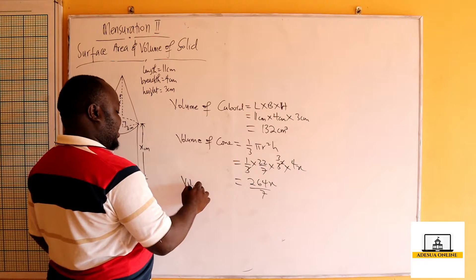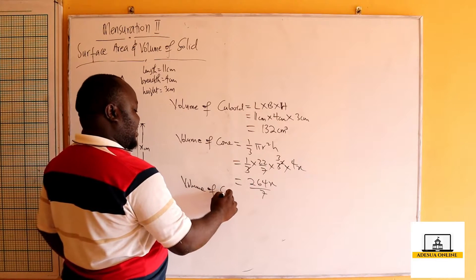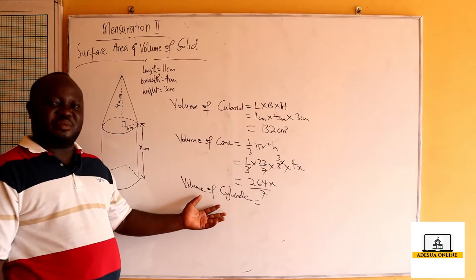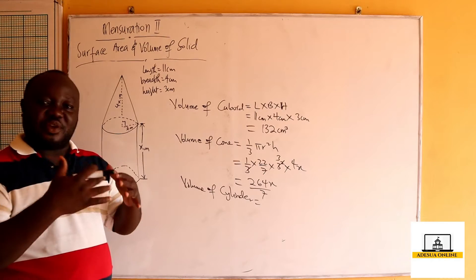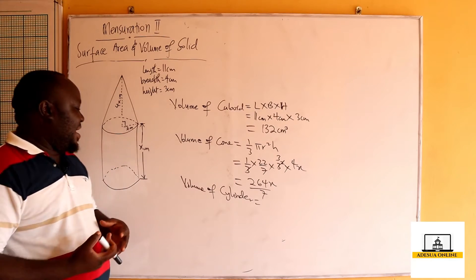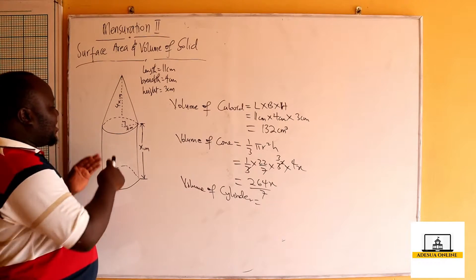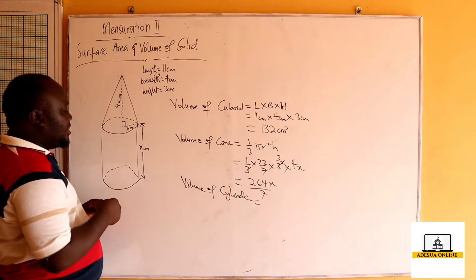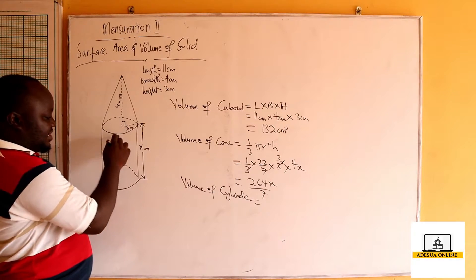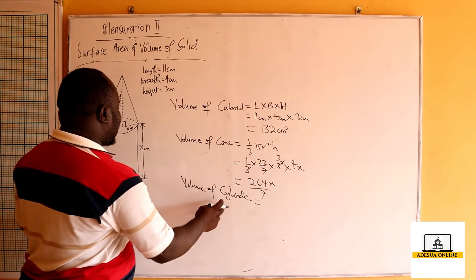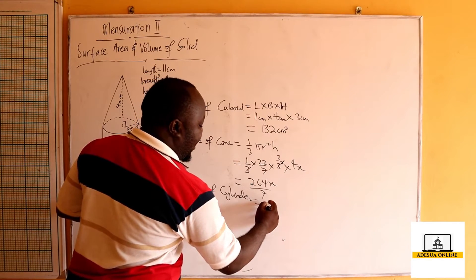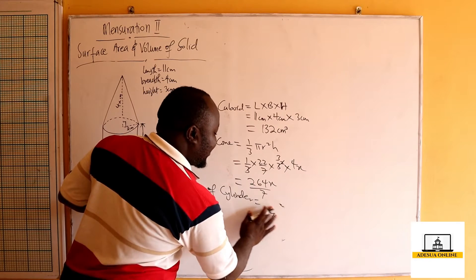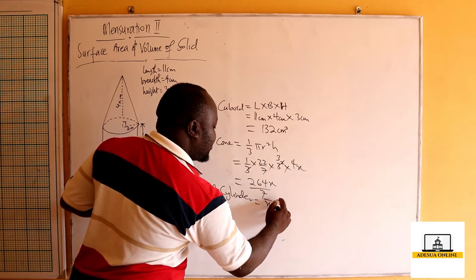Now for the volume of the cylinder: the volume of the cylinder equals the area of the cross-section times the height, where the area of the cross-section is the area of the circle, which is pi r squared multiplied by the height h. This has the same radius as the cone, so it is also 3 centimeters. So the volume of the cylinder equals pi r squared h, which is 22 over 7 times 3 squared times height.